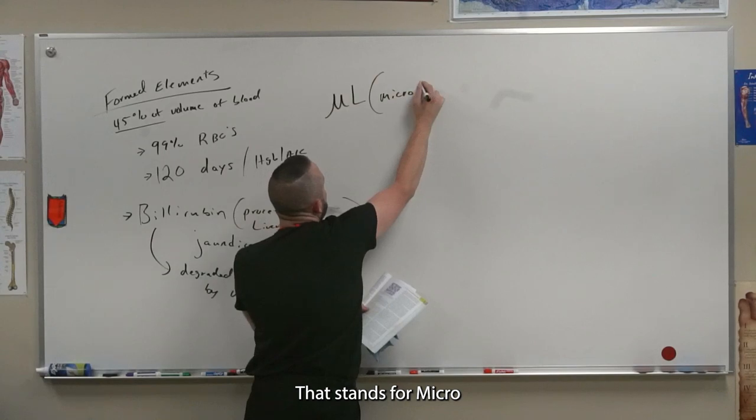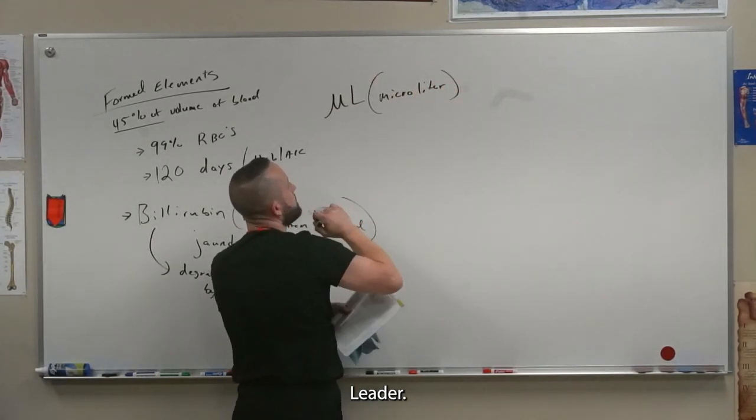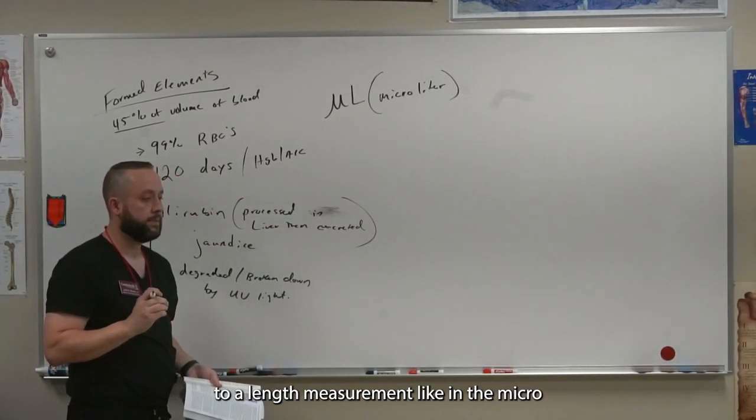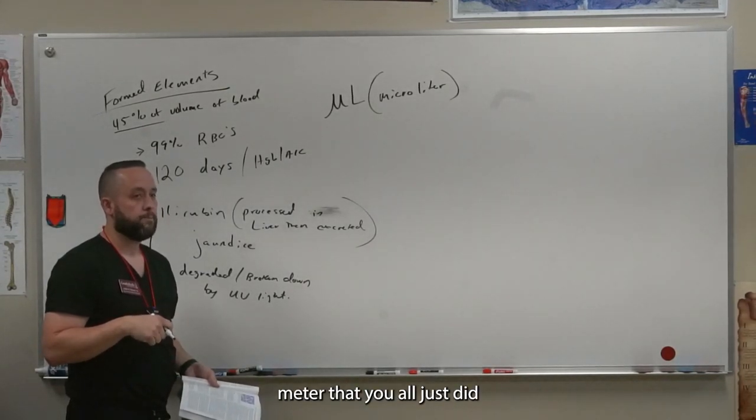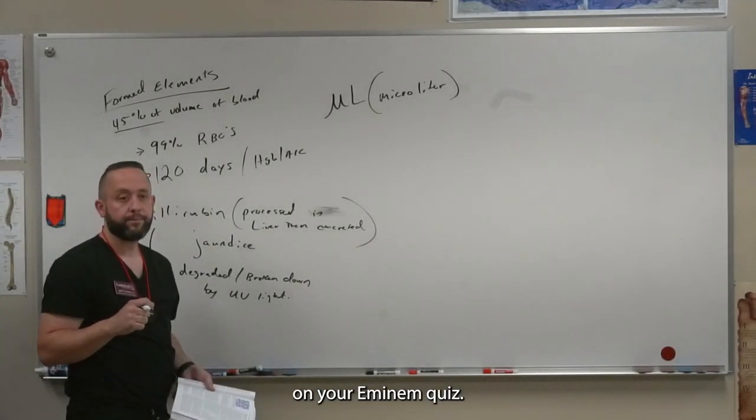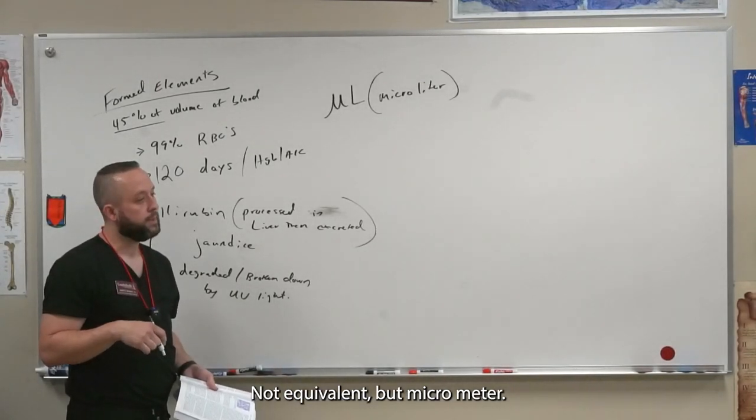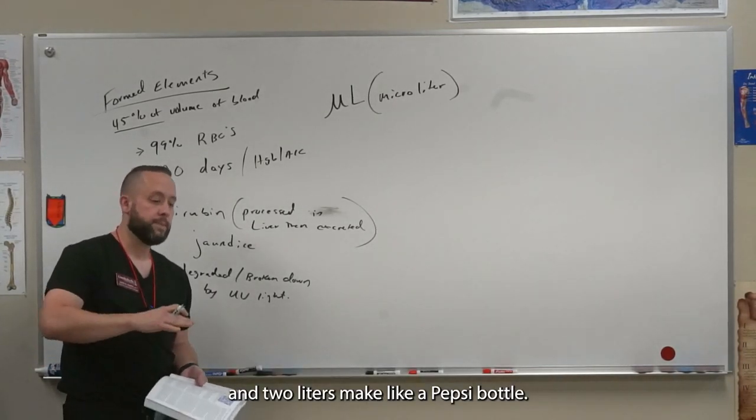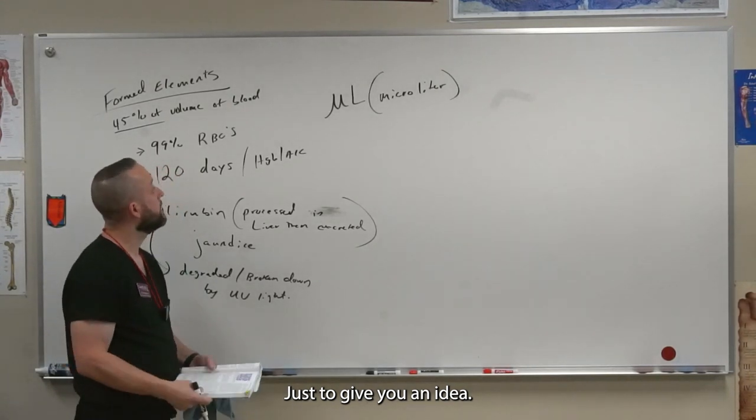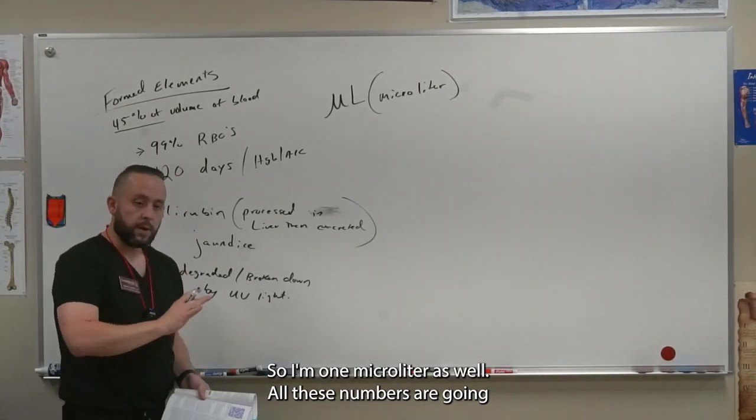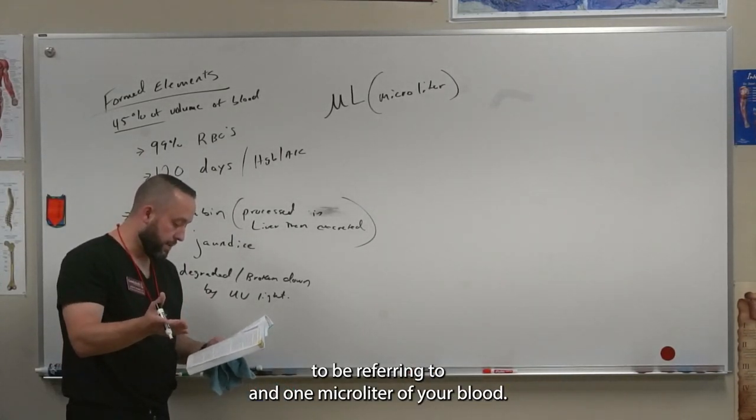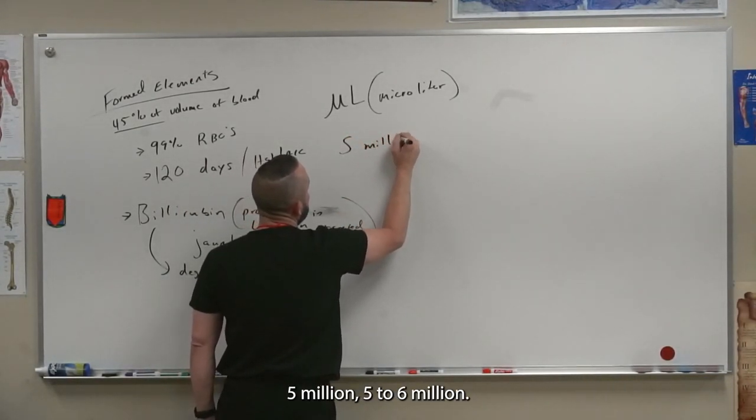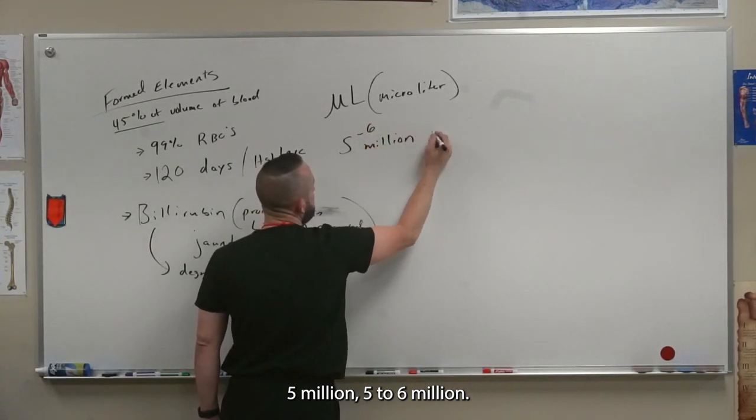That stands for microliter. It's equivalent to a length measurement like the micrometer that you all just did on your M&M quiz. There's like a million microliters in a liter, and two liters make like a Pepsi bottle, just to give you an idea. So in one microliter is what all these numbers are going to be referring to. In one microliter of your blood, it's about five million, five to six million RBCs.